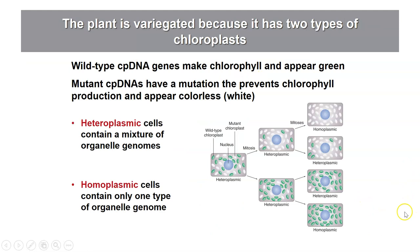Looking at the actual cells involved: cells can be one of two main types. In heteroplasmic cells — and remember, cells contain multiple chloroplasts — you can have a mixture of some chloroplasts containing a wild-type genotype able to produce chlorophyll (shown in green), and other chloroplasts that are mutant and unable to produce chlorophyll. As long as a heteroplasmic cell has some wild-type chloroplasts, it is able to produce chlorophyll and appears green.